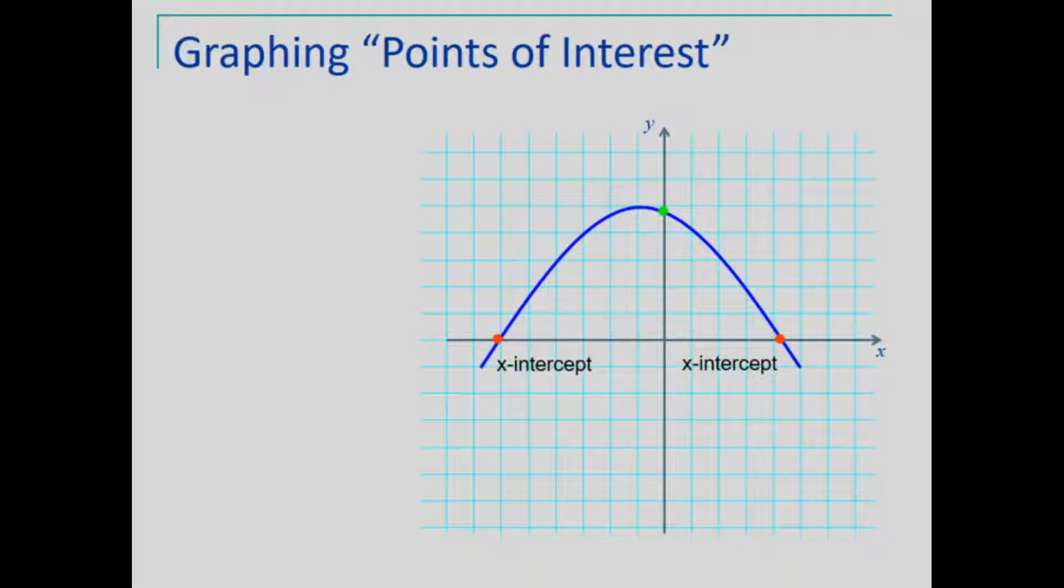The y-intercept, where the graph intersects the y-axis, and special to a quadratic equation is the vertex, the point of the graph that intersects with the axis of symmetry.